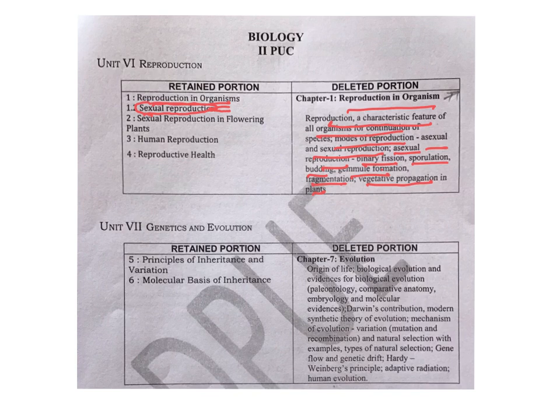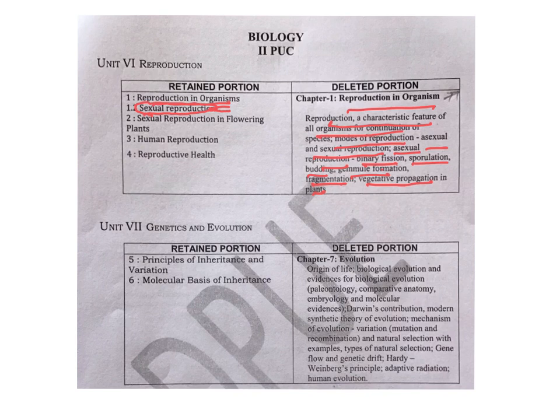Gene disorders and chromosomal disorders are all kept and retained. The second chapter in this unit, molecular basis of inheritance, is also retained. In that, you study about DNA — structure of DNA, DNA as genetic material, replication of DNA, types of DNA, coiling of DNA to form chromosomes, RNA, types of RNA, structure of RNA, protein synthesis, DNA fingerprinting, and the human genome project. All retained; nothing removed.